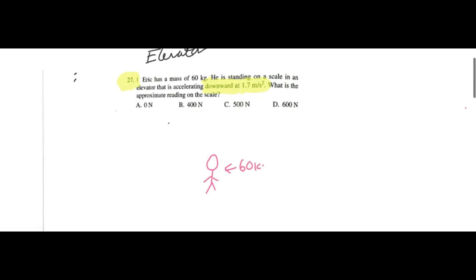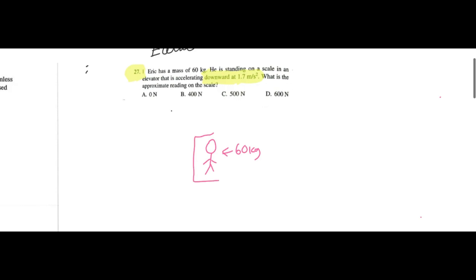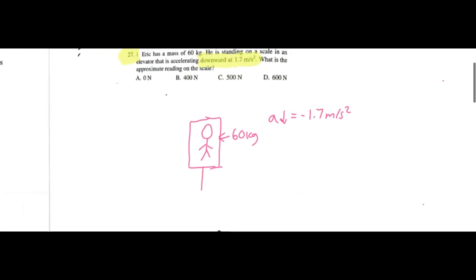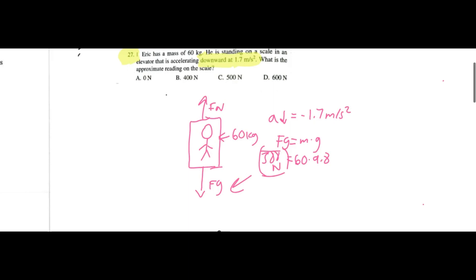We have an elevator problem — I think this is the easiest out of the three problems here. Eric has a mass of 60 kilograms and he's standing on a scale in an elevator, accelerating downwards at negative 1.7 meters per second squared. What is the approximate reading on the scale? Free body diagram: you've got Fg and then Fn. Those are the only forces because he's not moving in the x direction, so only the y direction really matters. Fg is m times g — I'm going to assume Eric is on Earth — so 60 times 9.8, which will be 588 newtons. We still have to find Fn because Fn is the reading. Whenever you have something that says approximate reading on the scale, the scale is going to be referring to Fn.